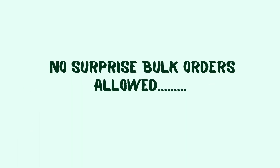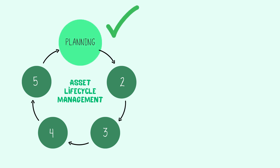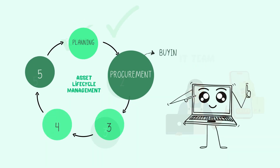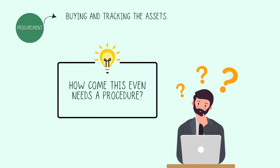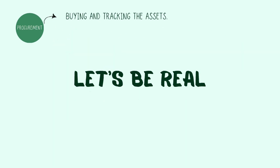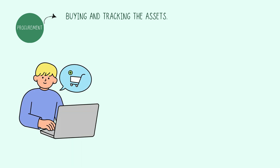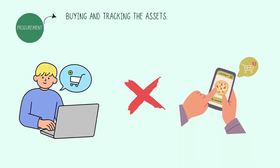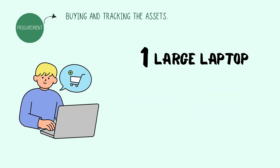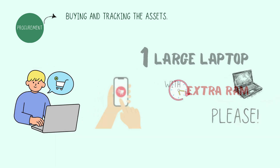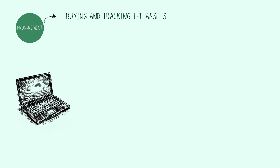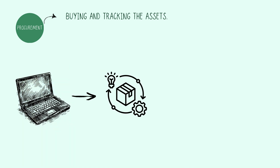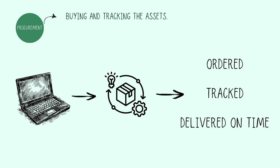No surprise bulk orders allowed. So the planning is done and IT is ready to place the order. Phase 2: Buying and tracking the laptops. How come this even needs a procedure? Because ordering laptops isn't like ordering pizza — you can't just say 'one large laptop with extra RAM, please' and expect it to show up in 30 minutes. Instead, IT goes through a whole process to make sure the right devices are ordered, tracked, and actually delivered on time.